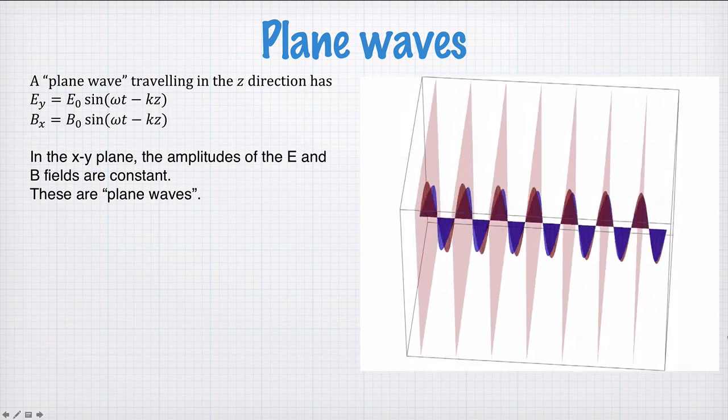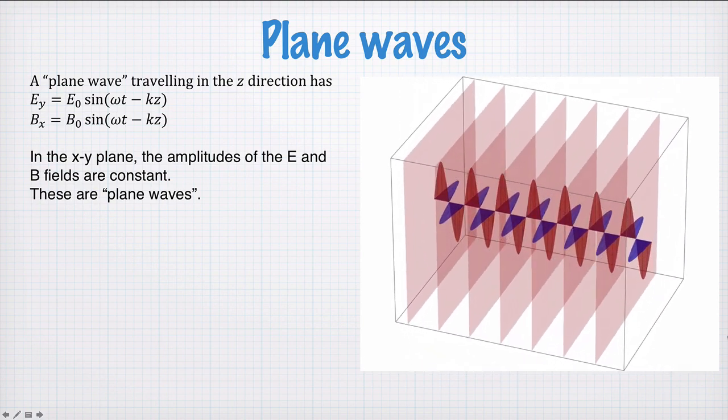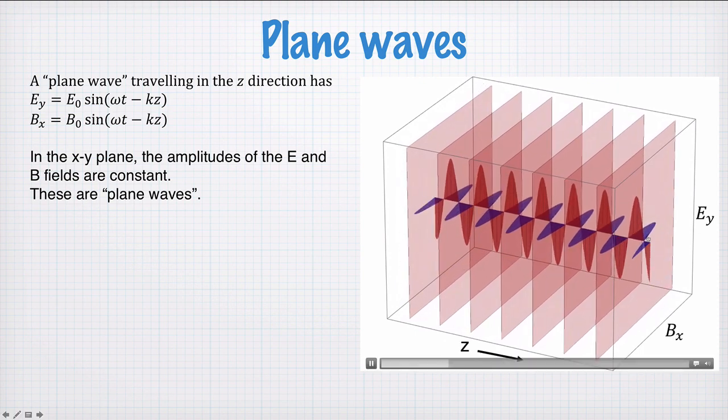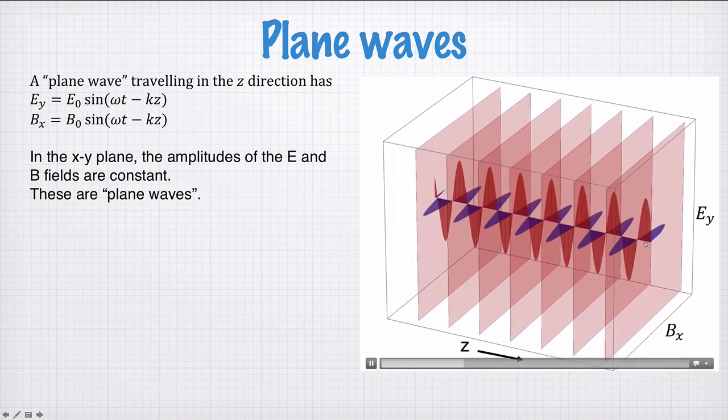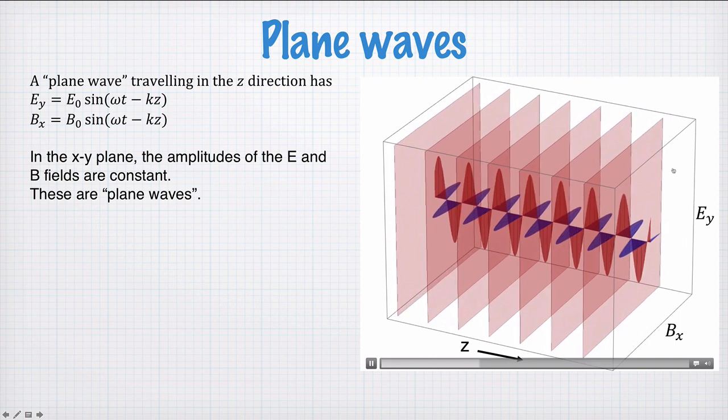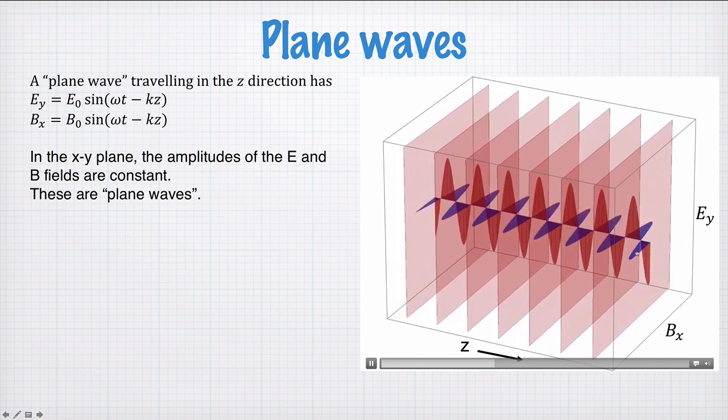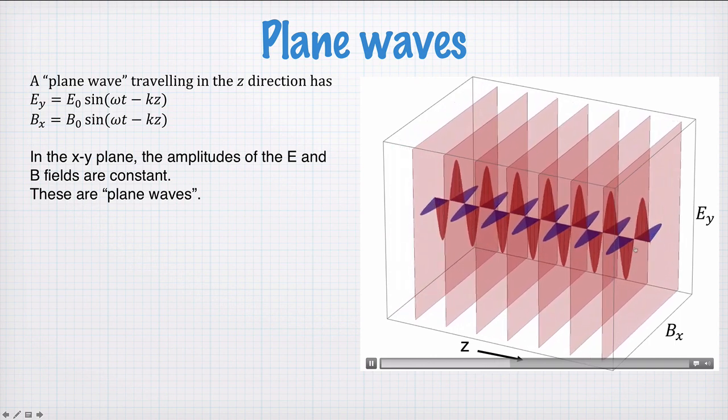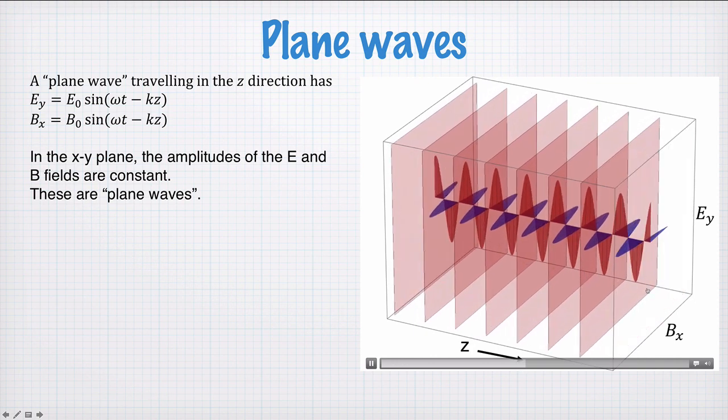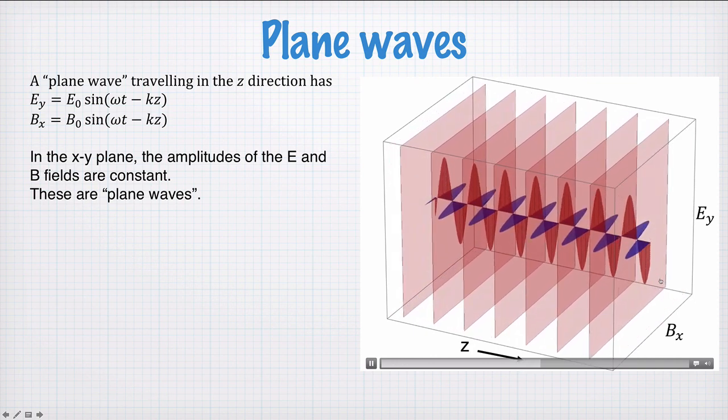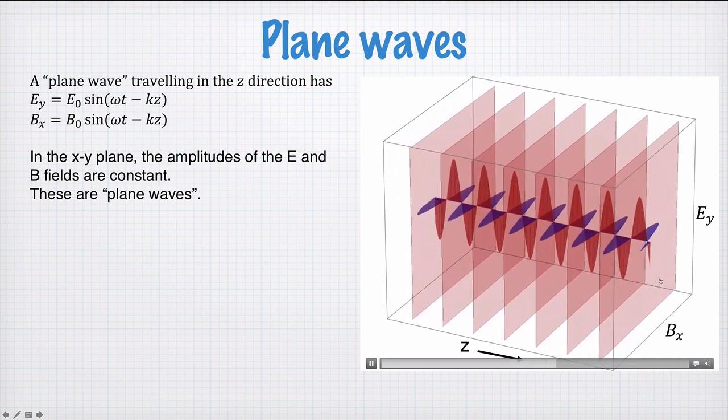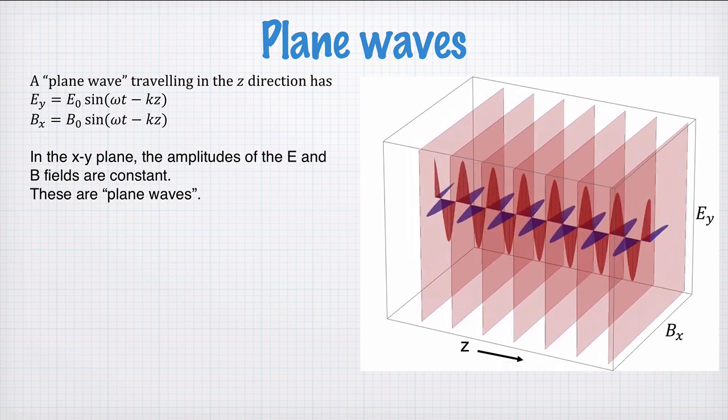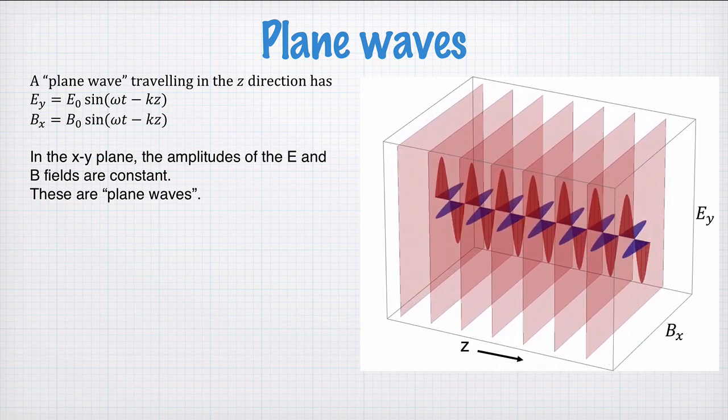And we call these plane waves because these planes have constant values across these cuts through the y axis. So we can visualize it like so when it's propagating through space. Again, this would be the amplitude of the electric field, but remember it's a vector in the y direction. This would be the amplitude of the magnetic field, but again it's a vector in the x direction. So each of these sheets would be full of vectors of the electric field pointing in the y direction, magnetic field in the x direction. And the values of these fields are constant across these planes.